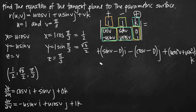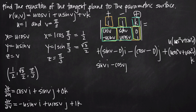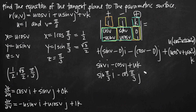Simplifying the cross product: the i and j terms stay as sine(v) i minus cosine(v) j. For the k term, we factor out u to get u times (cos²(v) plus sin²(v)), and since cos²(v) plus sin²(v) equals one, this simplifies to just u k. So the cross product is sine(v) i minus cosine(v) j plus u k. Now we evaluate at u equals one and v equals pi over three.